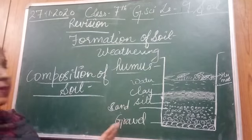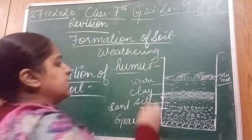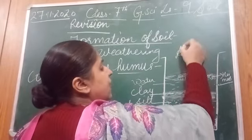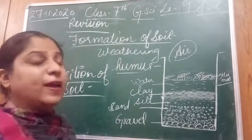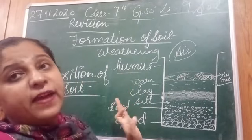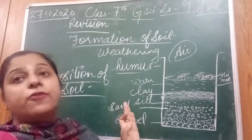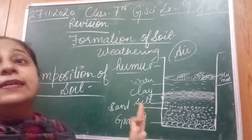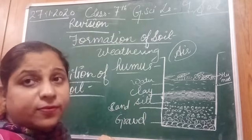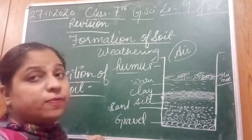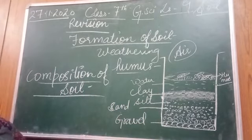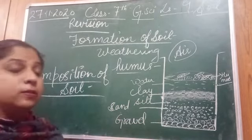Apart from these layers, soil also contains air and water. Air and water are very important for the growth of organisms living in soil — they get air and water from the soil.